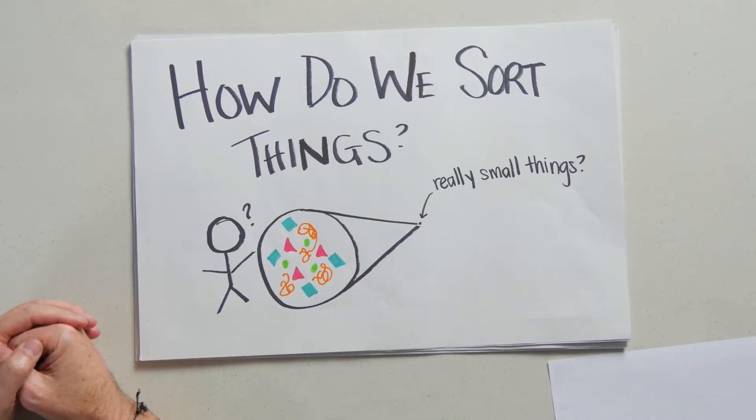And we're here today to talk to you about how do we sort things. Now when I say sort, you might think of this - sorting your laundry, sorting the dark clothes from the light clothes from the bright clothes.